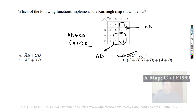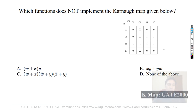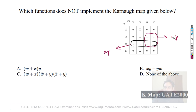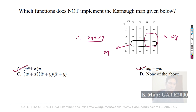Next question: which function does NOT implement the given K-map? For the K-map, two sub-cubes give XY and WY, so the SOP is XY plus WY. This matches both option A and option B. Options A and B are therefore equivalent and both implementable.